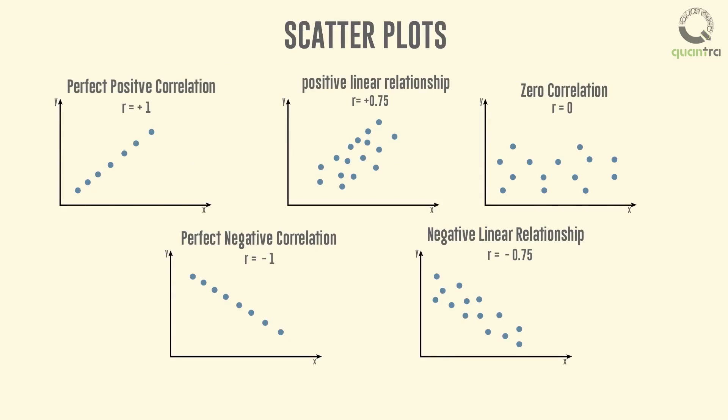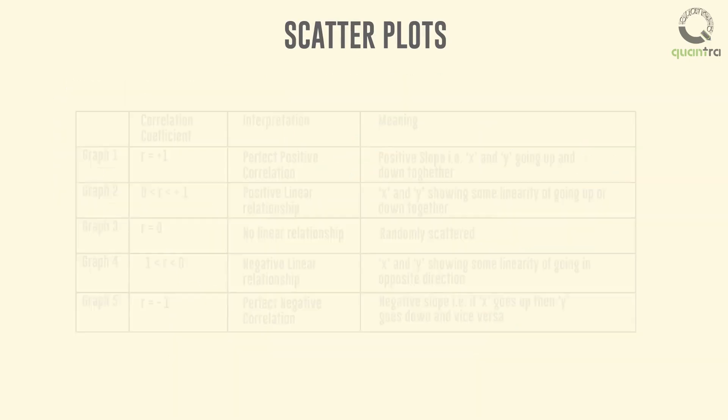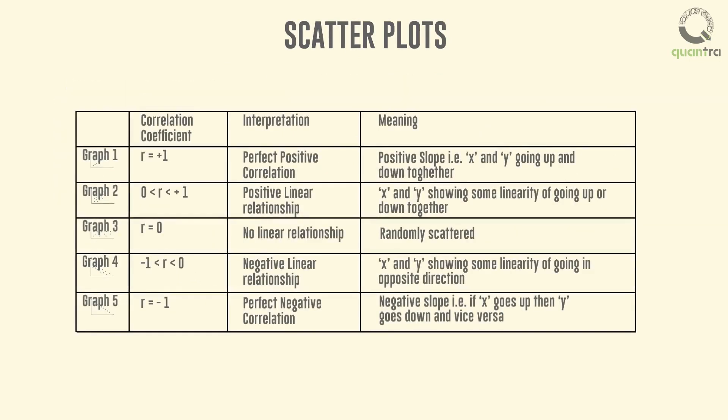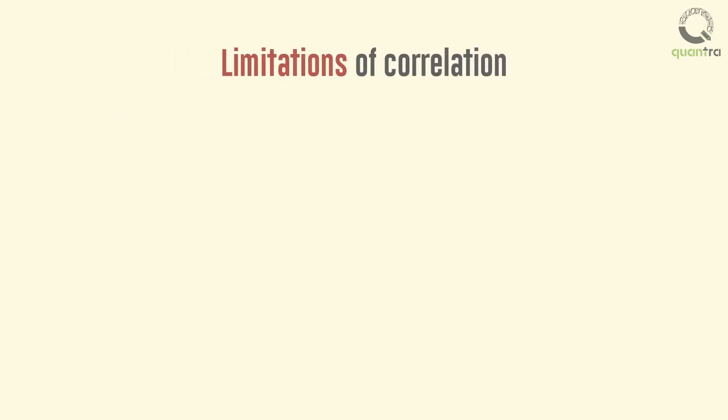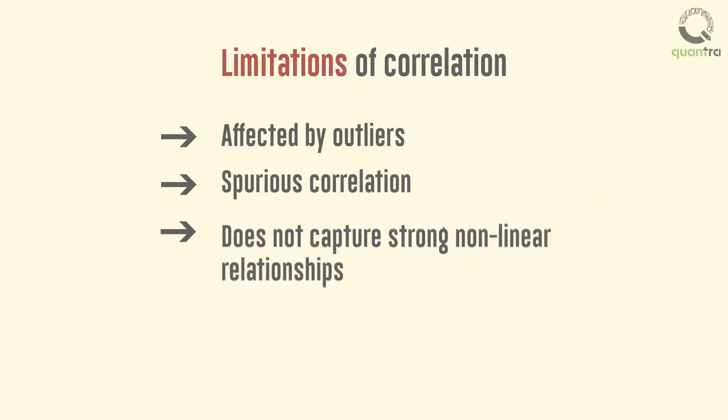Let us look at the five scatter plots of the stock ABC returns and index returns to understand correlation. Limitation to correlation analysis is that it may be affected by outliers, leading to spurious correlation, and as a result it does not capture strong non-linear relationships between variables.